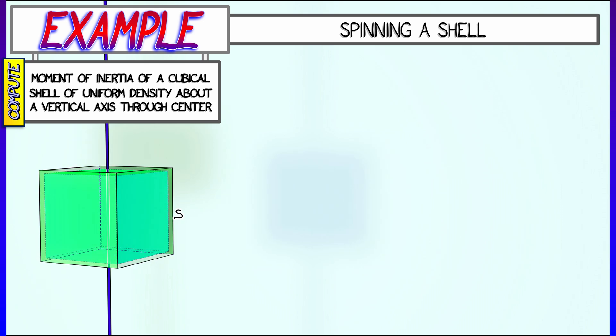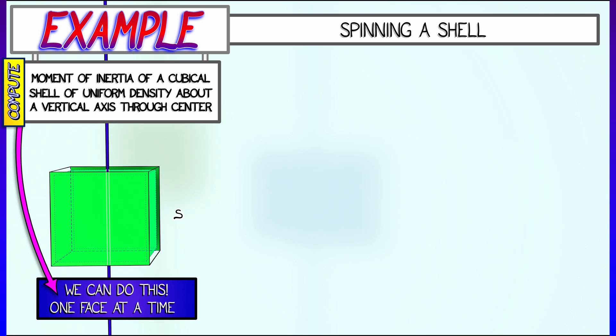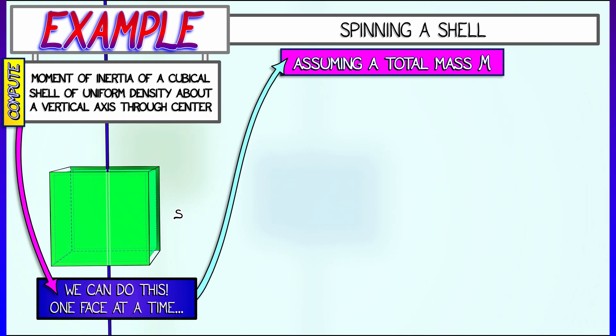Let's do a little bit of setup. Let's say the side length is s. Then what we want to do is take the total mass of this, let's say m, and we're going to break this up into one side at a time.